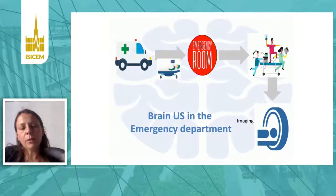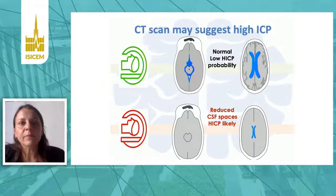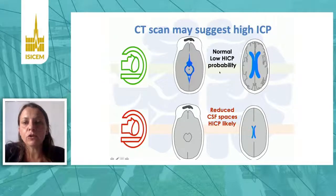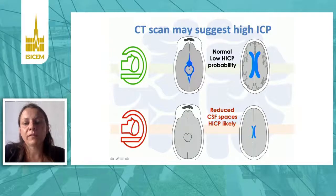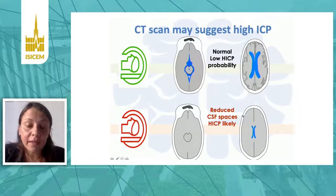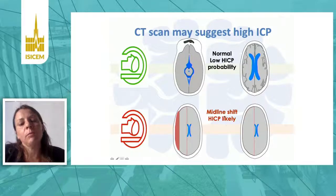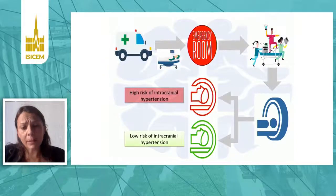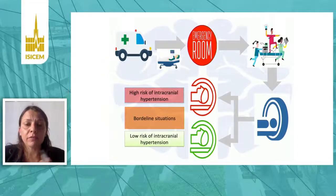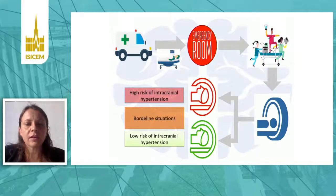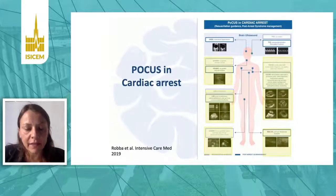Why is this important? When a polytrauma patient arrives in the emergency department, we perform a CT head. The CT can be clearly normal with low probability of elevated ICP when ventricles and basal cisterns are fine, or clearly abnormal when CSF spaces are reduced or there is significant midline shift. But there are many borderline situations where CT findings are not clear and we don't know whether to insert an invasive monitor. In these cases, brain ultrasonography can really come to our help.